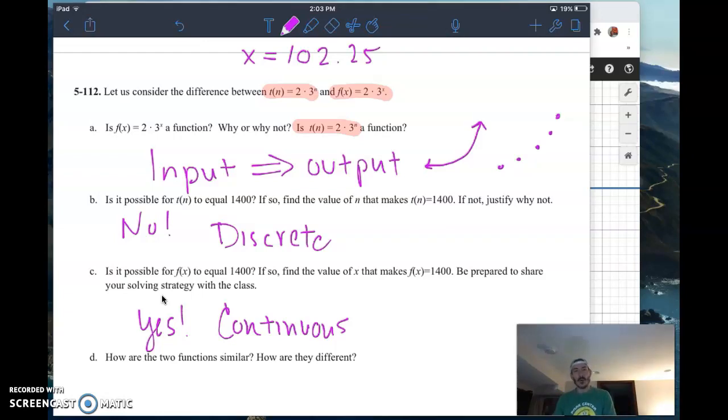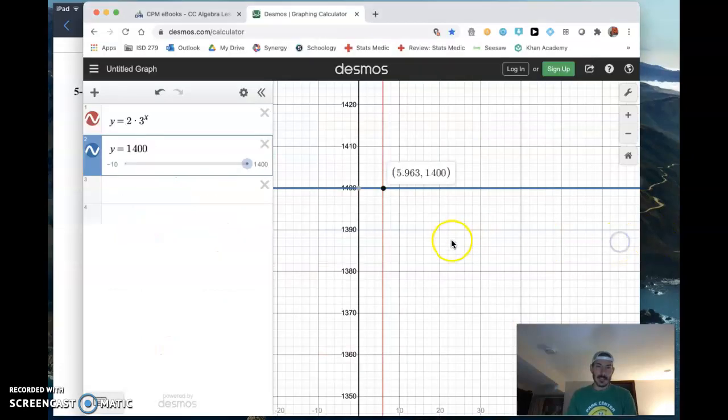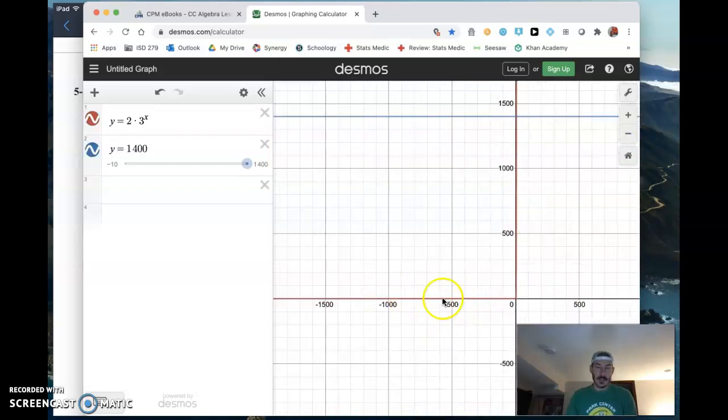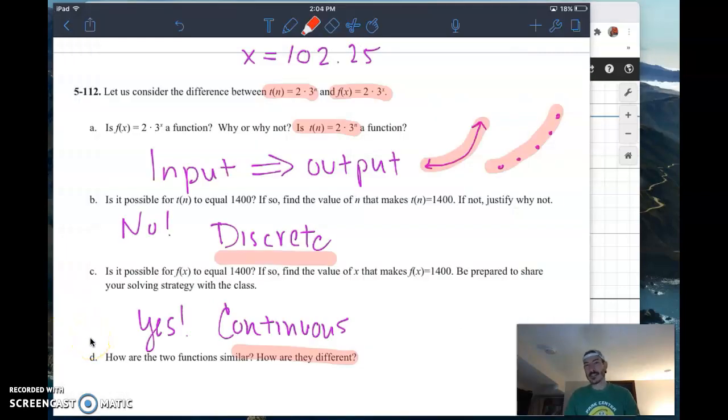Is it possible for this thing, f of x to equal 1400? The answer for that is yeah. Why? Because that graph is continuous. And maybe that doubles down for you, that this graph is discrete. How are the two functions similar? How are they different? First of all, the graphs are going to take on a very similar shape. But the graph of the sequence is definitely different because it's discrete. The graph of the function is definitely different because it is continuous. That is evident in that graphical or visual representation. One more time: a discrete function only has those nice integer values that it accepts as inputs and provides outputs. The continuous function will take those rational values and also exists in that negative space for x.